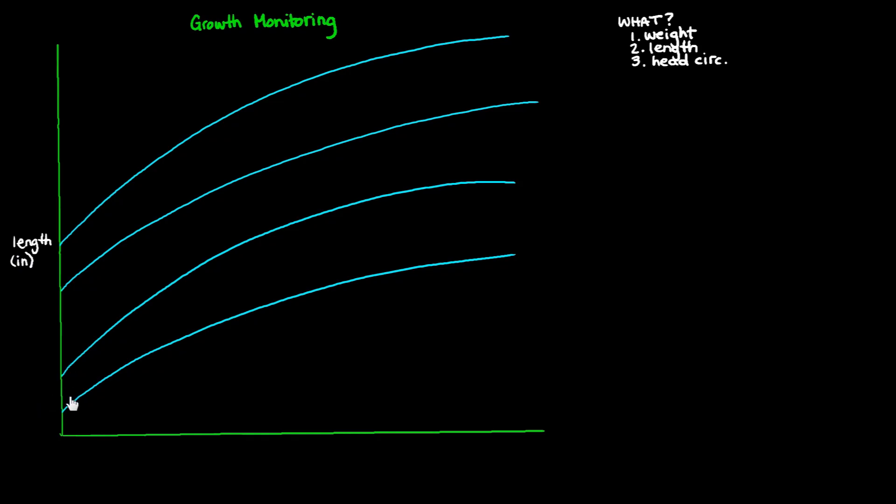And then the lower band, this band over here, also on the y-axis, is going to represent the weight of the child. Weight in pounds if we're in the U.S., in kilograms elsewhere in the world. And then on the x-axis, we plot the age of the child. So this would be birth.